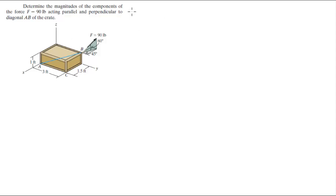The first thing you need to do is find all the points involved. The position vectors of these points are: A equals 1.5i plus 0j plus 0k, and B is 0i plus 3j plus 1k.